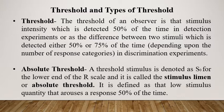We also need to know about threshold and its types. A threshold is that stimulus intensity detected 50% of the time in a detection experiment, or the difference between two stimuli detected 50% or 75% of the time in discrimination experiments, depending on the number of response categories. The first type is the absolute threshold, denoted S0 at the lower end of the R scale, defined as that low stimulus quantity that arouses a response 50% of the time — the lowest intensity the observer is able to detect 50% of the time.